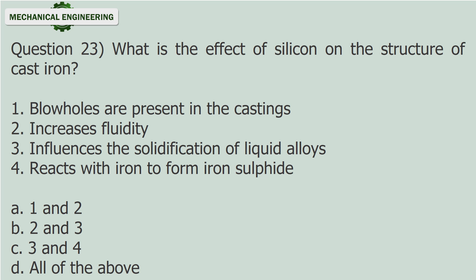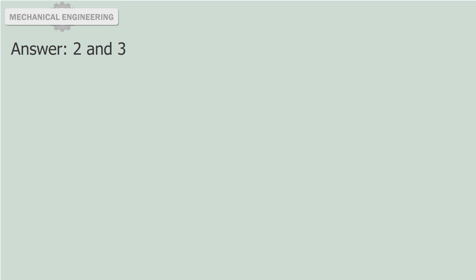Question 23: What is the effect of silicon on the structure of cast iron? 1. Blow holes are present in the castings. 2. Increases fluidity. 3. Influences the solidification of liquid alloys. 4. Reacts with iron to form iron sulfide. A. 1 and 2. B. 2 and 3. C. 3 and 4. D. All of the above. Answer: 2 and 3.